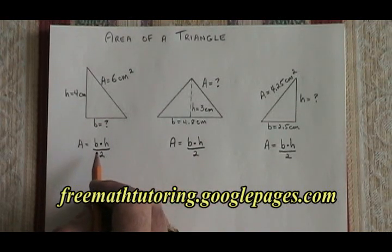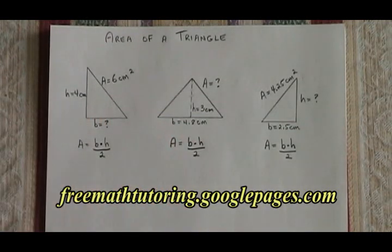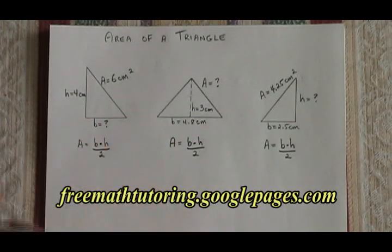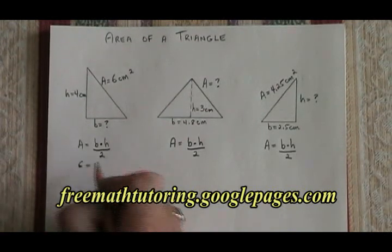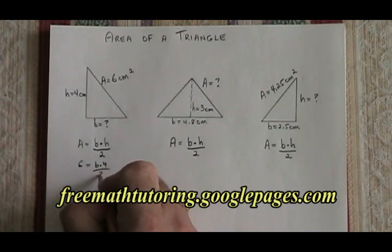In this triangle, the height is 4 centimeters and the area is 6 centimeters squared. What is the length of the base? We fill in the formula. 6 equals B times 4 over 2.